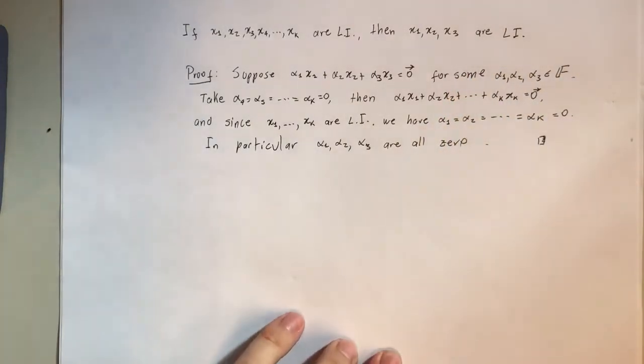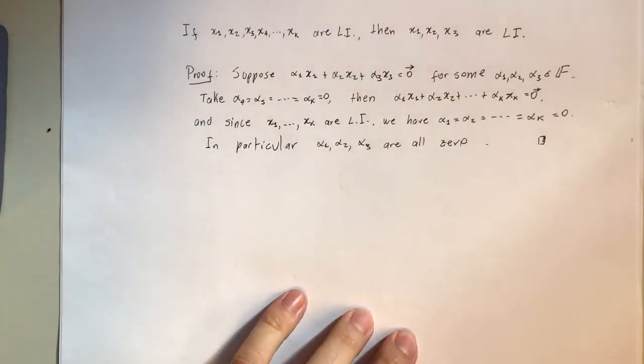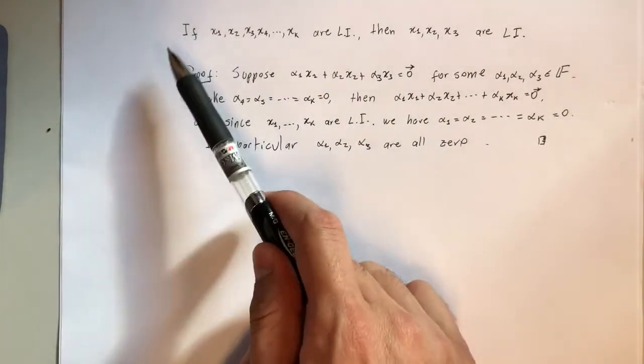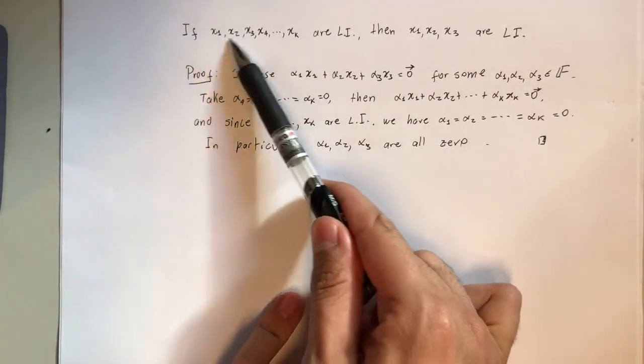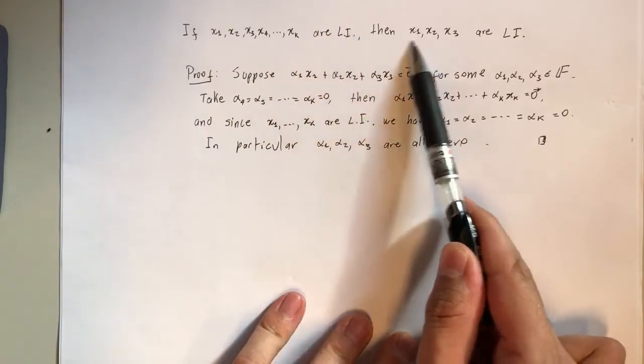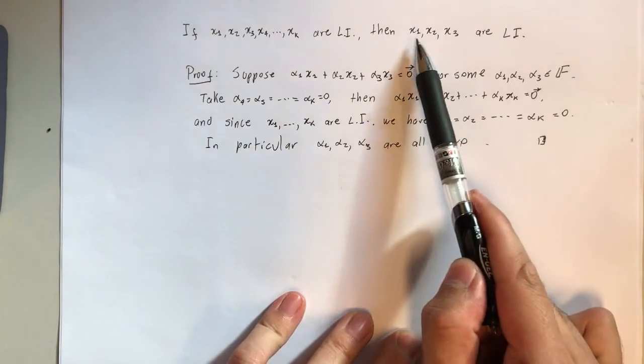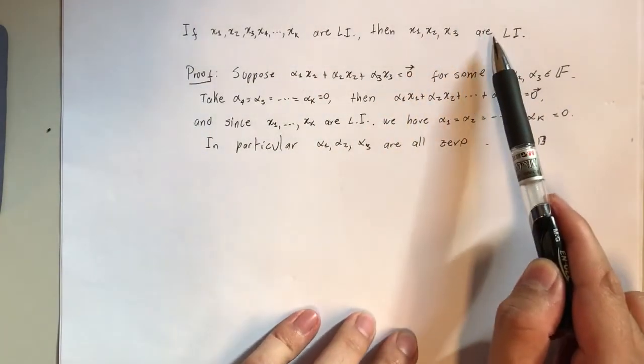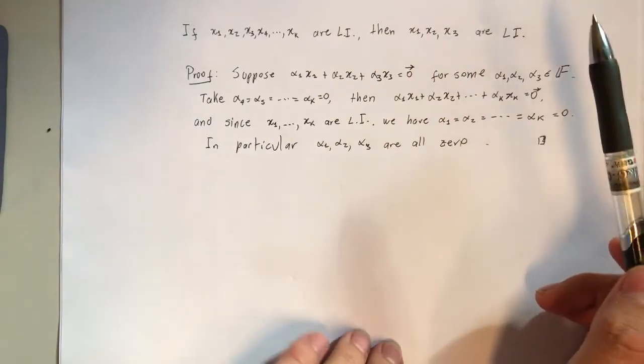Okay, the previous version of the proof was a bit too long, so let's make this one without writing. We're going to prove that if a family of k vectors is linearly independent, then a sub-family (here I'm assuming a sub-family with three elements, but it doesn't matter) is also linearly independent.